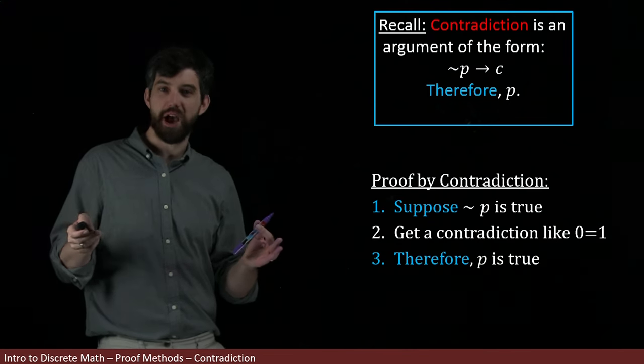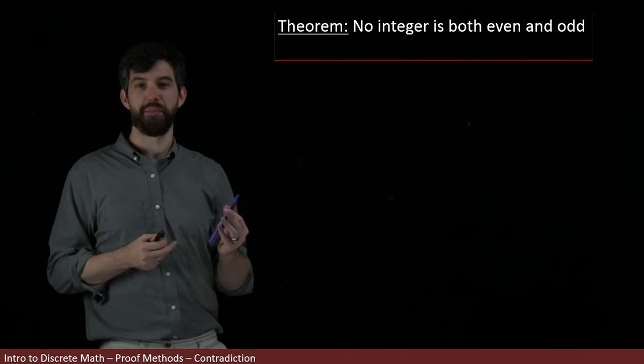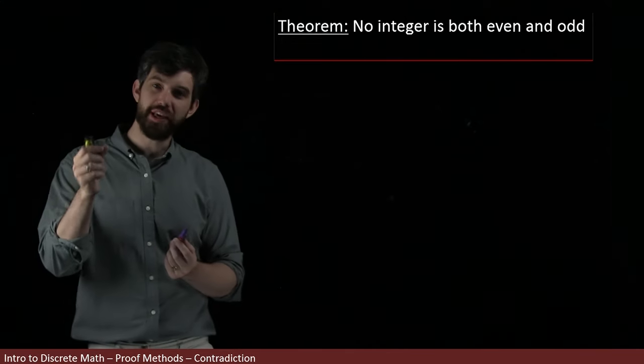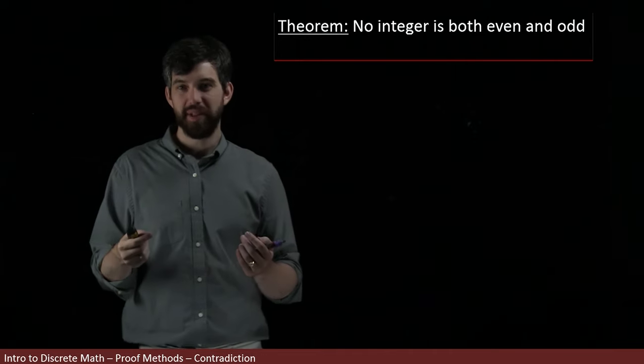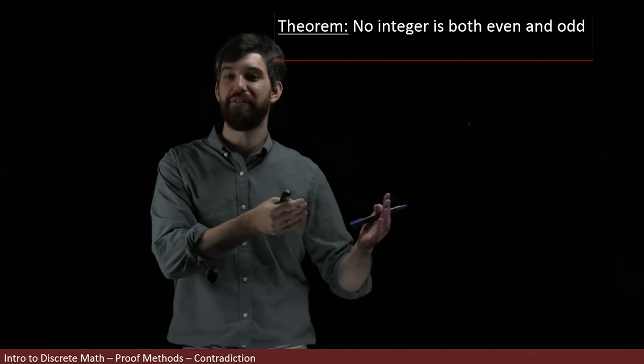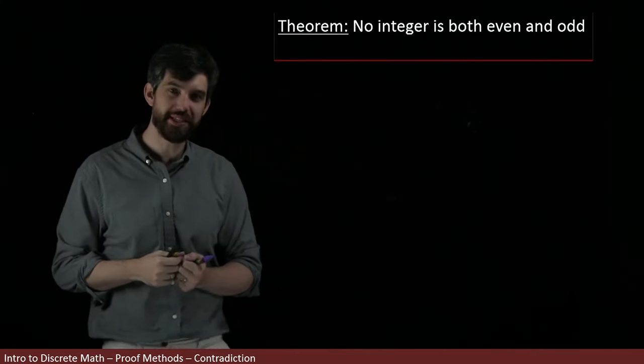So as an example, let's consider this theorem. No integer is both even and odd. Now the problem here, if I try to prove it directly, as in if I wasn't allowed to use contradiction, is that, okay, I could check it for one, I could check it for two, I could check it for three, check it for four.